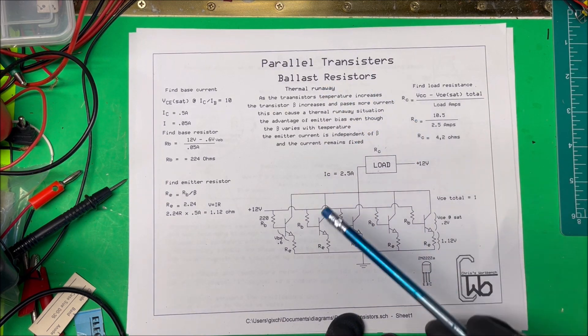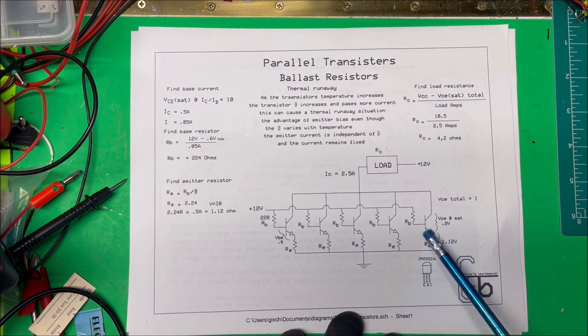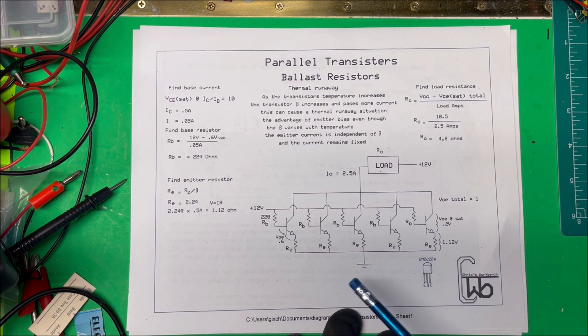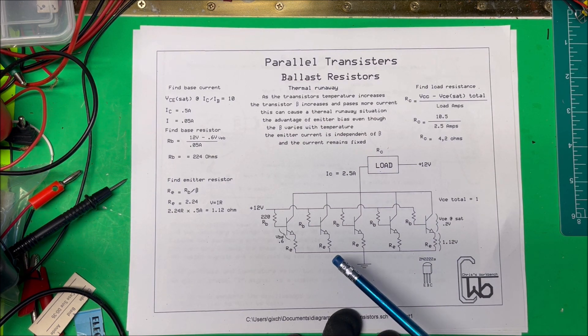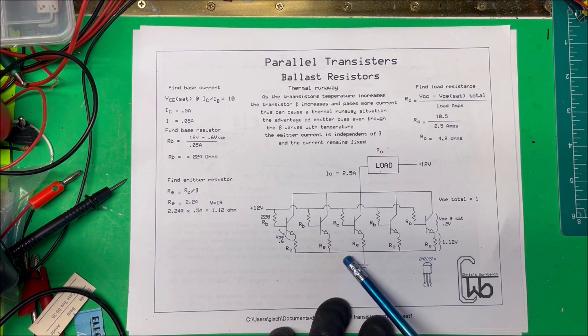Let's take a look at parallel transistors. I'm going to put five transistors in parallel. These are 2N222's and they're good for about 600 milliamps apiece. Then we're going to try to have a load here of about two and a half amps.